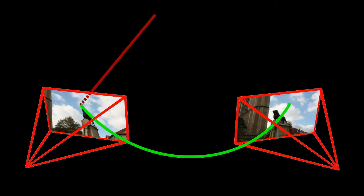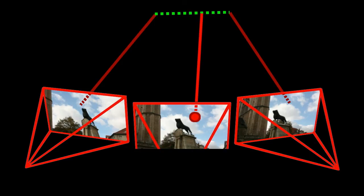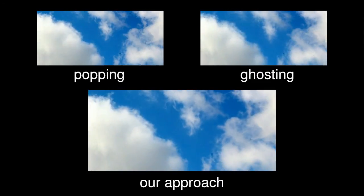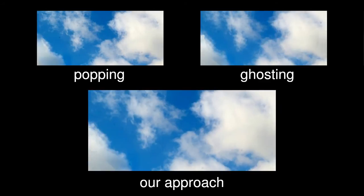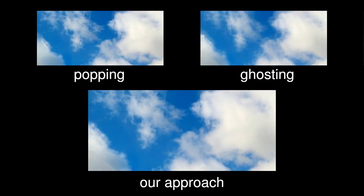Taking their respective depths and a weighting function into account, we move the 3D position of our pixel between the two reconstructed world space positions. By applying this simple 3D warping scheme, we can avoid artifacts like blurring, ghosting, or popping in the final result.